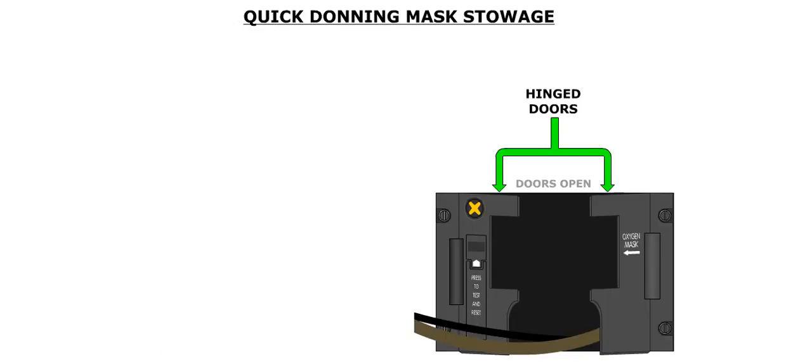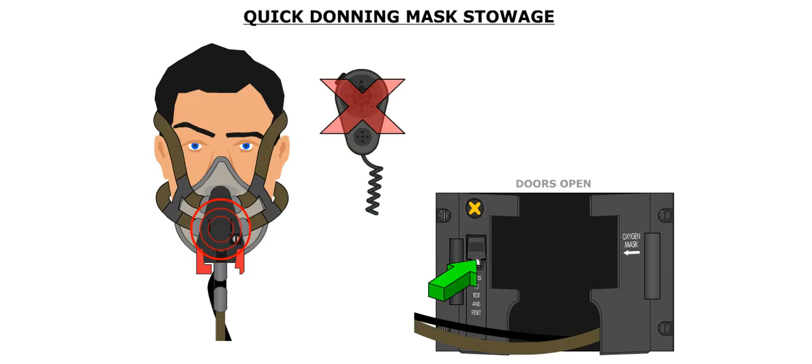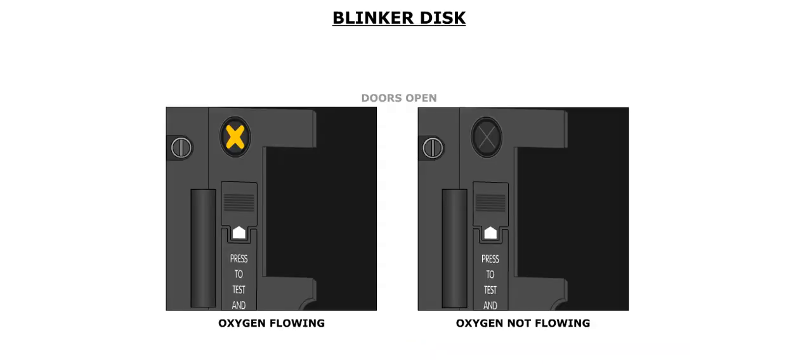The crew oxygen container compartment has two hinged doors that allow easy removal of the masks. The left door has a test reset push button that allows oxygen flow when the door is opened. The push button also automatically activates the mask microphone and disables the boom microphone. When oxygen is flowing to the masks, an indicator on the upper left door displays a yellow cross. When oxygen stops flowing, the yellow cross disappears.